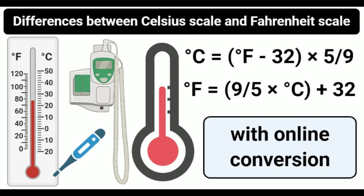The Celsius scale is widely used in almost every part of the globe, while the Fahrenheit scale is mostly used in the United States and some of its territories. Celsius can be converted into Fahrenheit by the formula: °F = (9/5 × °C) + 32. Fahrenheit is convertible into Celsius by the formula: °C = (°F − 32) × 5/9.